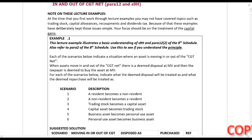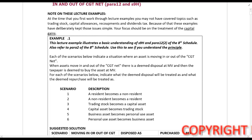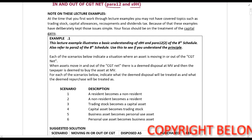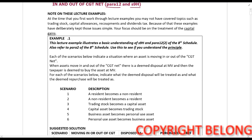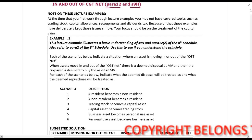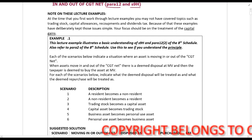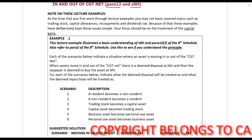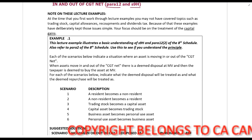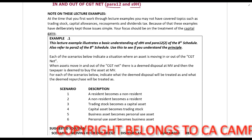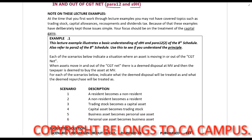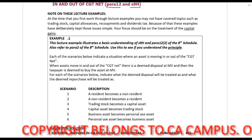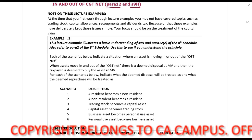In this lecture example, we are going to be looking at assets moving in and out of the CGT net — basically paragraph 12 in section 9H. It's very important to remember that you need to know what is included in the CGT net for a resident and for a non-resident.